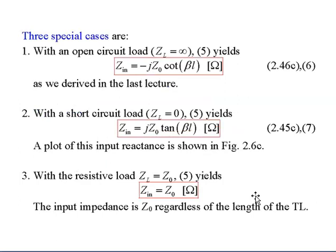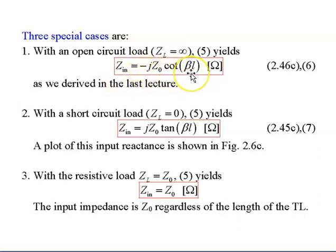There are three special cases to consider. First, an open circuit load: if ZL equals infinity, the equation simplifies to Zin = −jZ0·cot(βL). Second, a short circuit load: if ZL equals 0, the equation simplifies to Zin = jZ0·tan(βL).